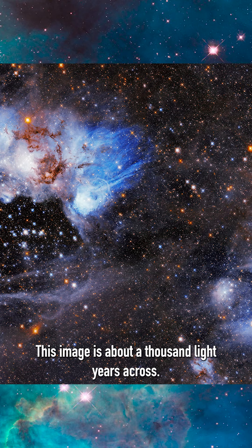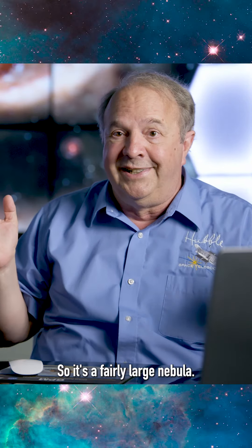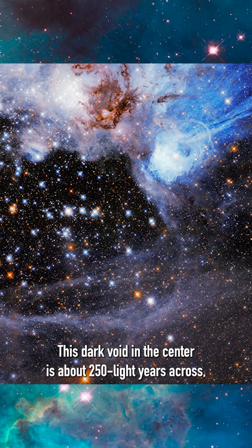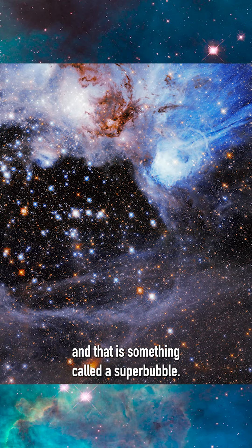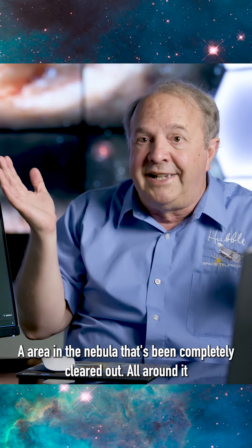This image is about a thousand light years across, so it's a fairly large nebula. This dark void in the center is about 250 light years across, and that is something called a super bubble, an area in the nebula that's been completely cleared out.